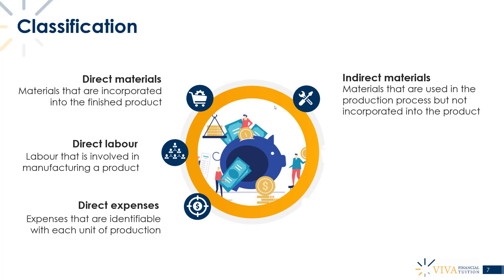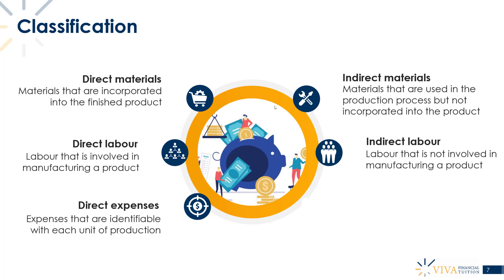The next classification is indirect labor — labor not directly involved in producing a product. An example would be a supervisor or manager on the production line. They're not actually producing the product; their job is to make sure targets are being met, people are turning up, and that they're motivated. Because they're not directly involved in producing the product, they are not direct labor but indirect labor.